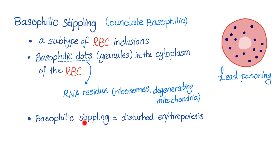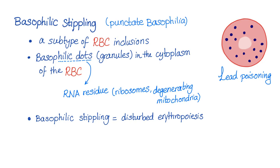Basophilic stippling means there is a problem with erythropoiesis, or new formation of red blood cells. The most significant cause of basophilic stippling is lead poisoning — please never forget this for your exam. When do we see basophilic stippling? Lead poisoning, of course.